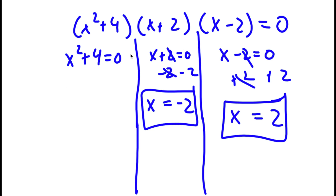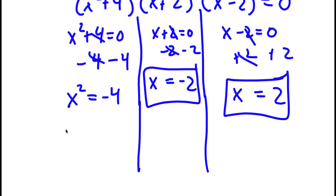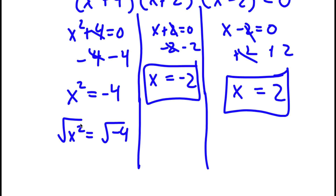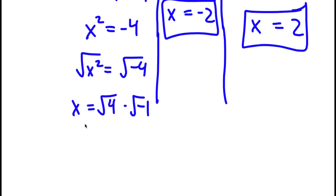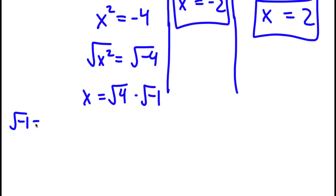Finally, for x to the power of 2 plus 4 equals 0, I subtract 4 on both sides to get x squared is equal to negative 4. Taking the square root on both sides, the square root of x squared is x, and the square root of negative 4 can be rewritten as the square root of 4 times the square root of negative 1. The square root of negative 1 is equal to the imaginary number i.